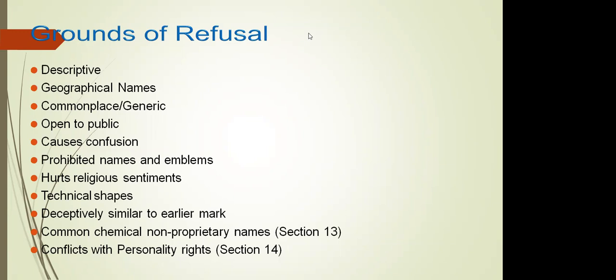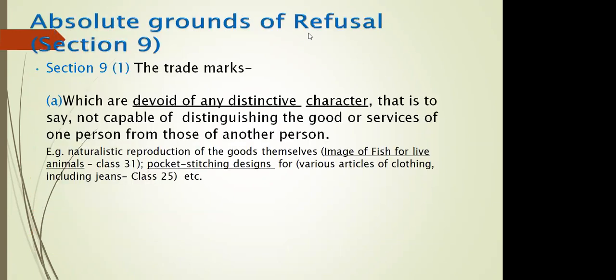There are three sections covering grounds for refusal: Section 9 (absolute grounds), Section 10, and Section 11 (relative grounds). Absolute grounds under Section 9 refer to trademarks devoid of any distinctive character — not capable of distinguishing goods and services of one person from another. For example, a naturalistic reproduction of goods such as images of fish for live animals (Class 31), or pocket stitching designs for clothing including jeans (Class 25).